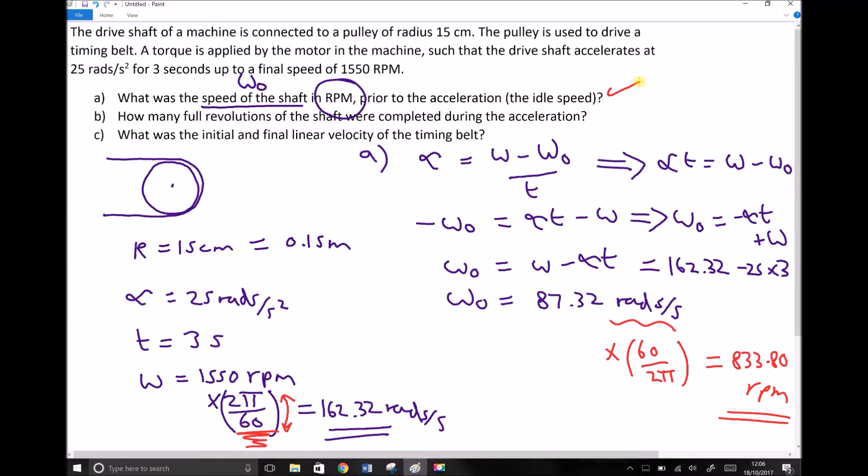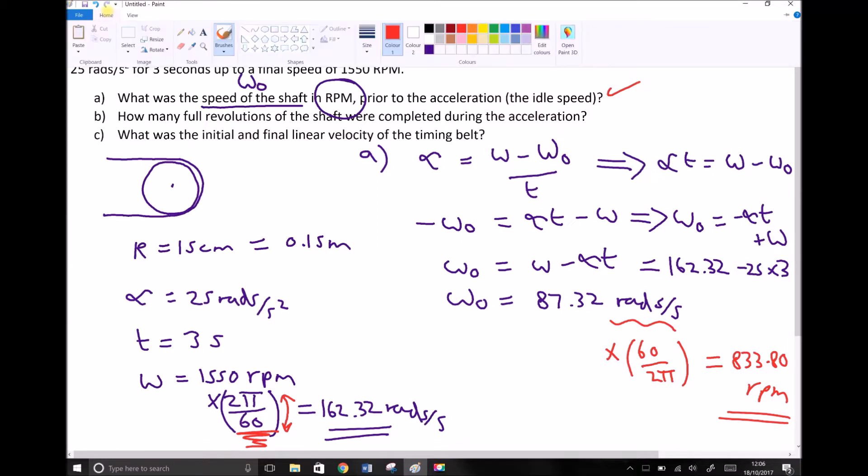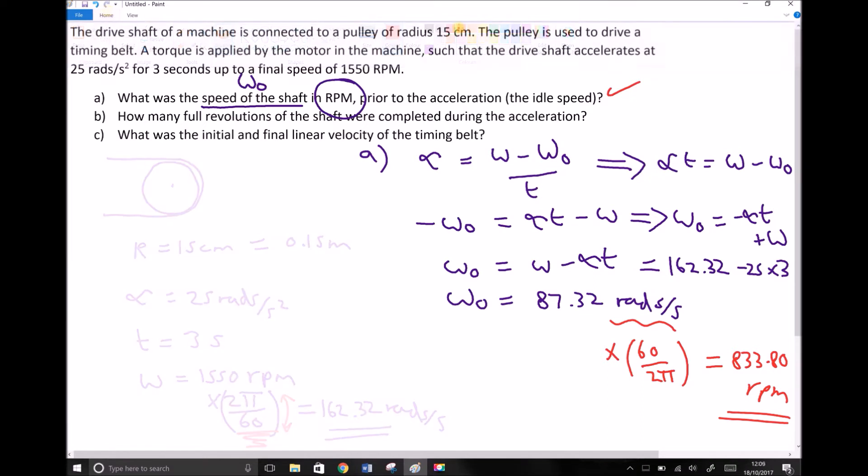So let's clear some space and then we can apply the equation. And our angular equation for this is theta equals omega zero t plus a half alpha t squared. So we don't need to rearrange this. The thing we're trying to find is already the subject. So we can just input our values.